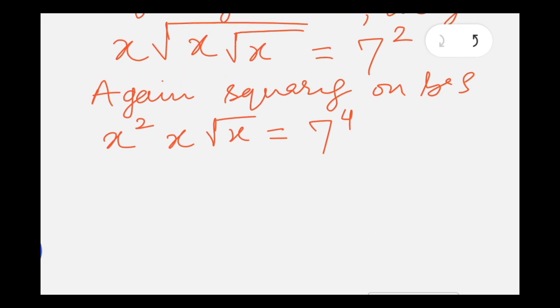So taking again square of both sides, which results x to the power 4 times x squared times x equals to 7 to the power 8. Now this is on the left side a product of the same base, so their powers will be added, which is 7, and equals to 7 to the power 8.